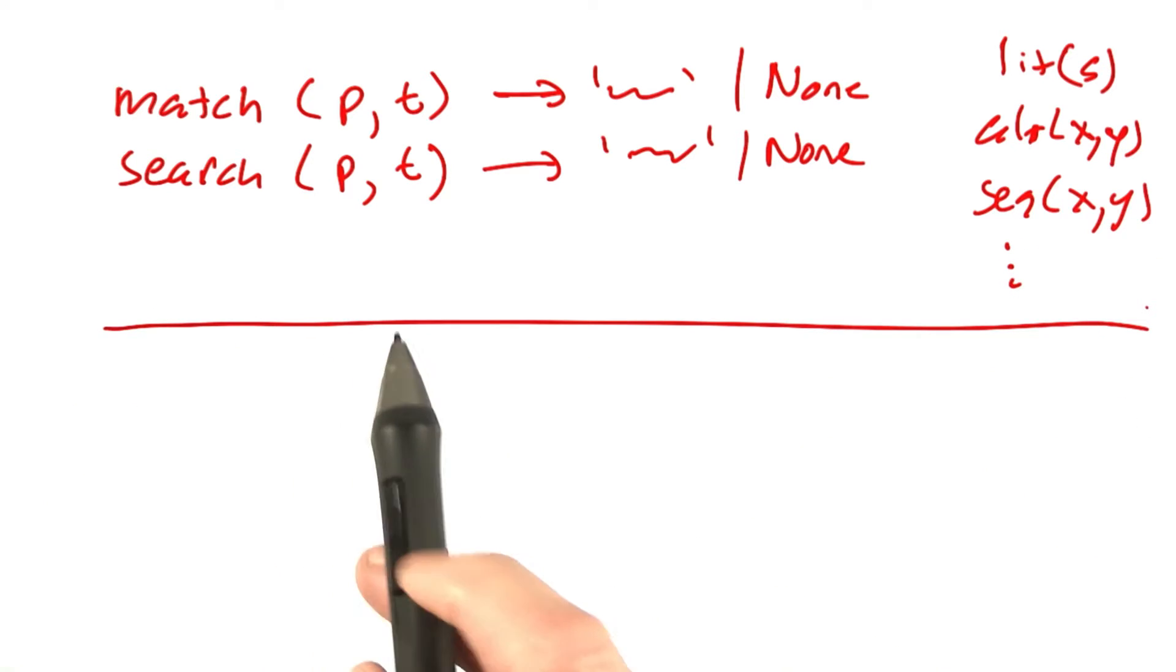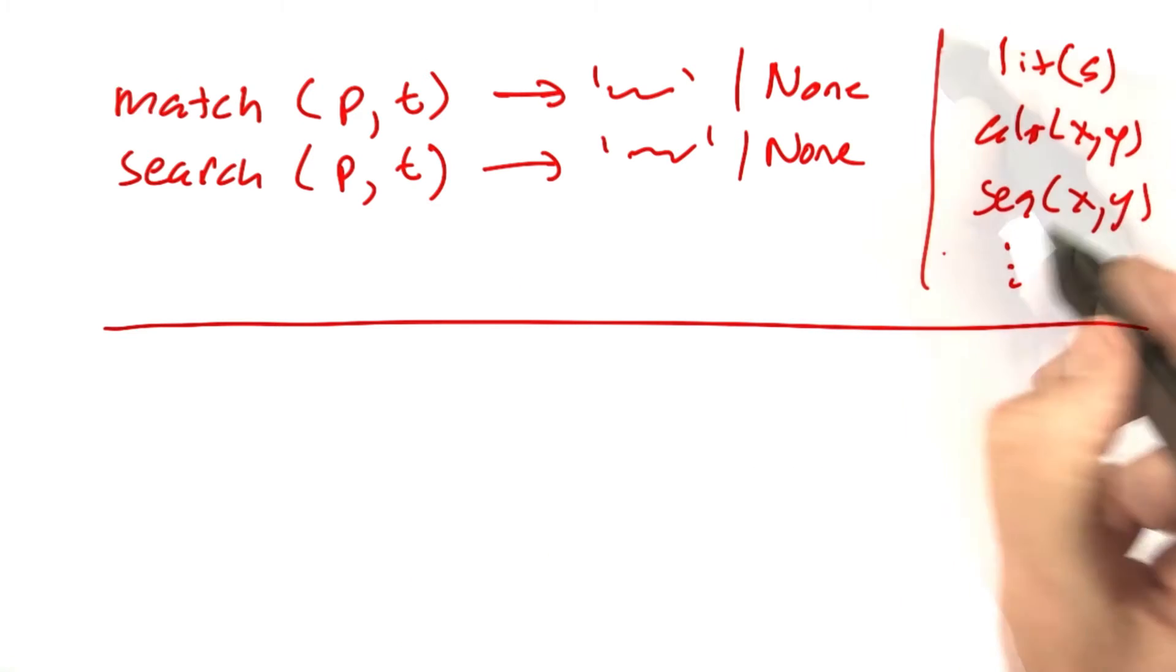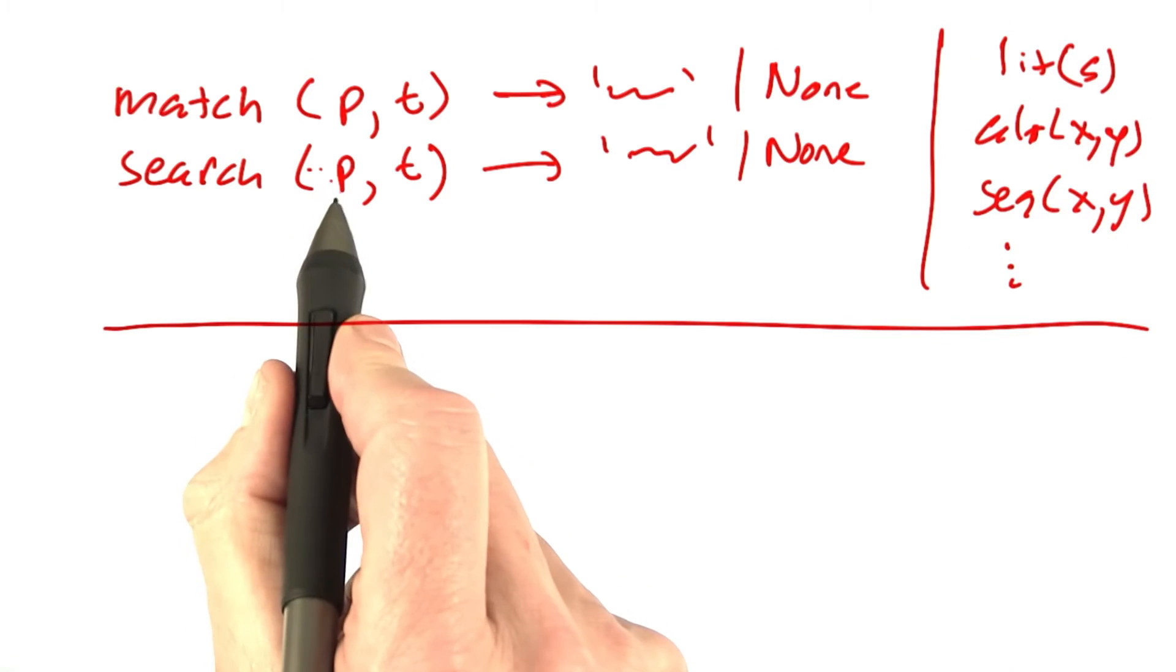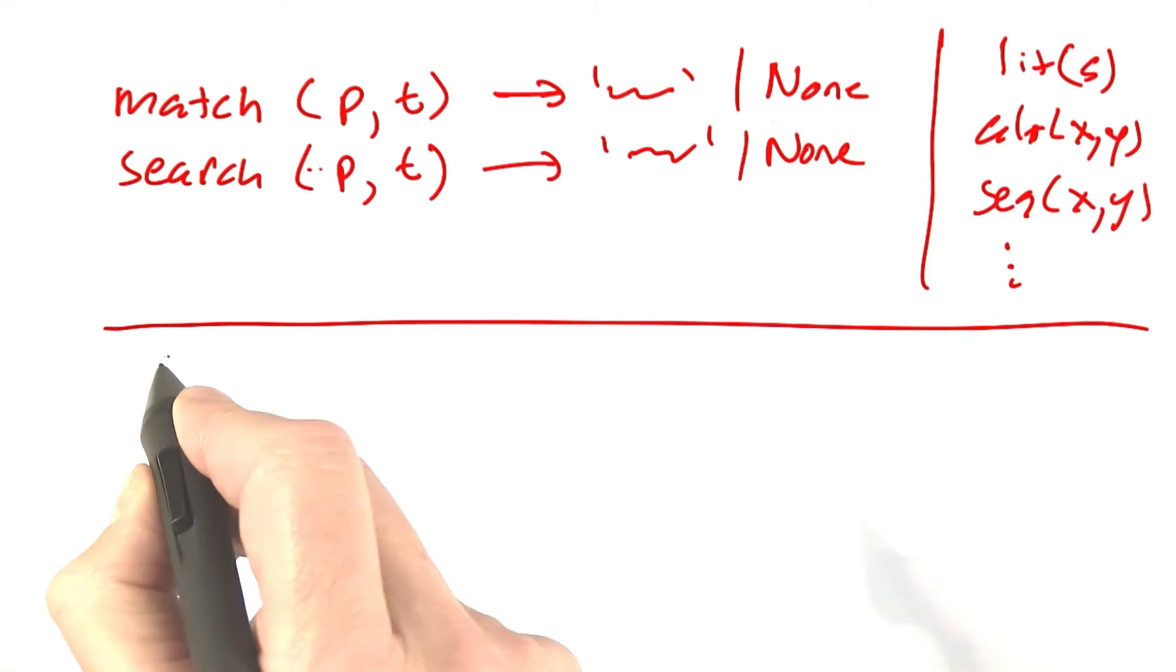That's the API that we expect the programmer to program to. You create a pattern on this side, and then you use a pattern over here against a text to get some result.